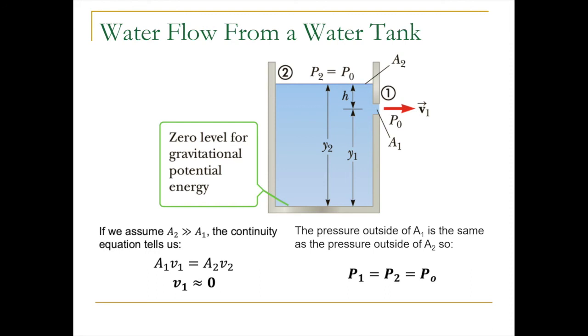Now there is a major assumption that we have to make and it relates to the velocity of the water as it drops down from the top. You can see that we've quoted the continuity equation and if we make the assumption that A2 is much much larger than A1, looking at the continuity equation that essentially makes v1 equal to zero.